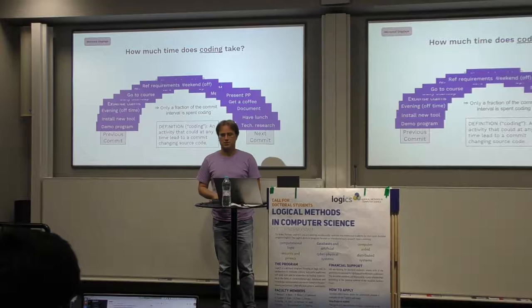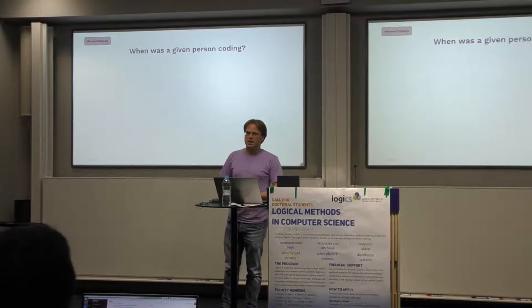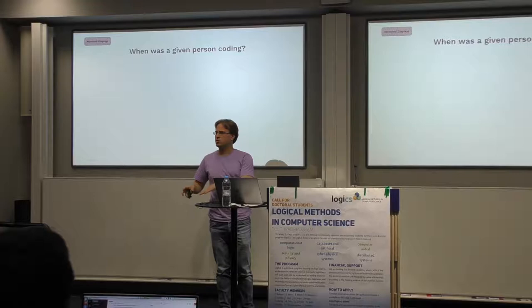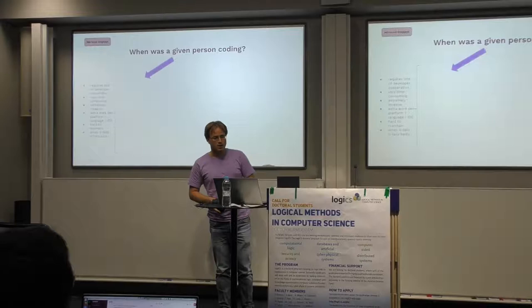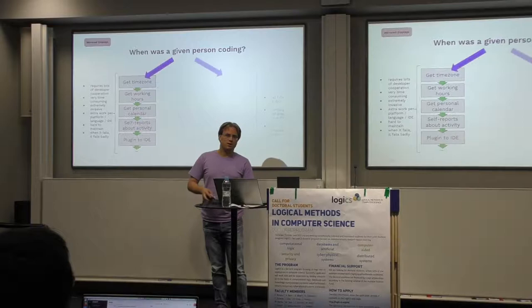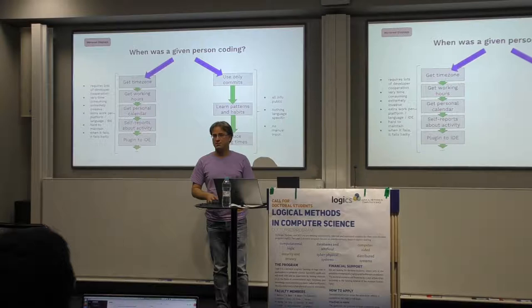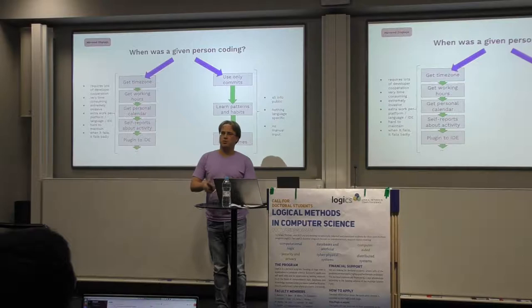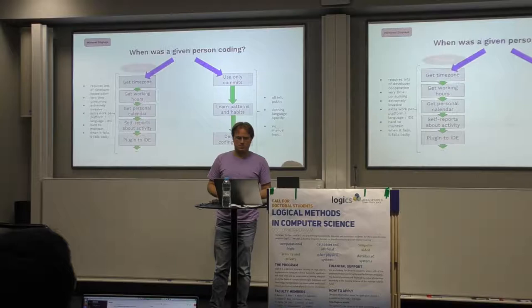What we're interested in is simply the pure act of coding — how long does that take? There are basically two roads to go down. One is the road of extreme surveillance, which is frankly a lot of effort, error-prone, and prohibitively invasive. The other approach, which we take, is to use only the publicly available data — the timestamps of commits — and from there infer some general conclusions.